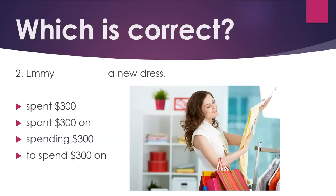Number 2. Emmy, a new dress. Which is correct? (A) Spent $300, (B) spent $300 on, (C) spending $300, (D) to spend $300 on.